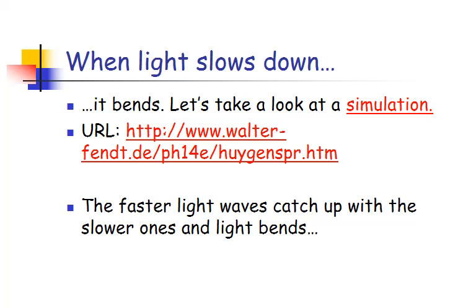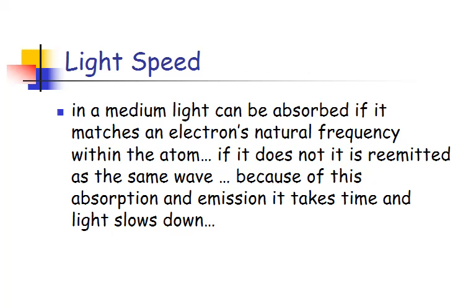So when light slows down, it bends and the faster light catches up with the slower and light bends there. And so what happens in a medium, if the light cannot be absorbed and it cannot match the natural frequency within the atom, like a corresponding energy level jump, then it's not remitted as the same wave. And so because of this absorption and emission, it takes time and light does slow down as it goes through.